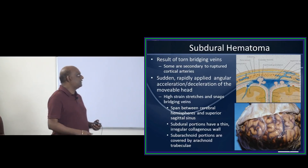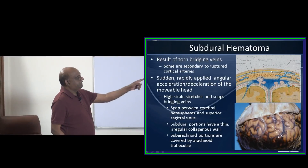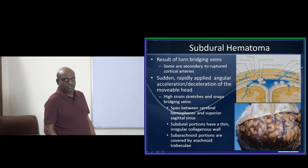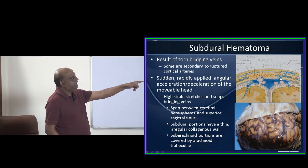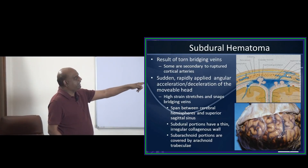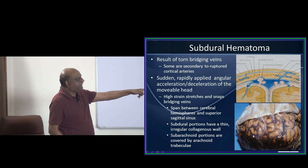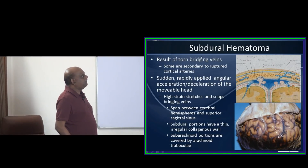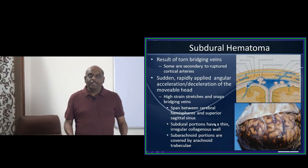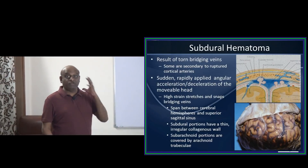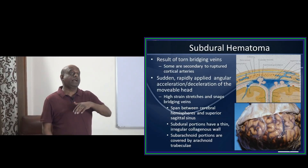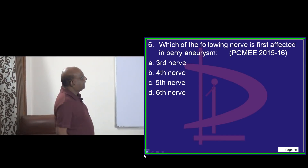Cortical bridging veins — you have the skull bone, below that you have the dura, and below the dura you have these cortical bridging veins. If they happen to be injured, there will be a diffuse venous blood hemorrhage over the surface of the brain, which is called subdural hematoma. Any sudden deceleration or sudden acceleration of a movable head is the underlying cause for subdural hematoma, especially in an elderly person.